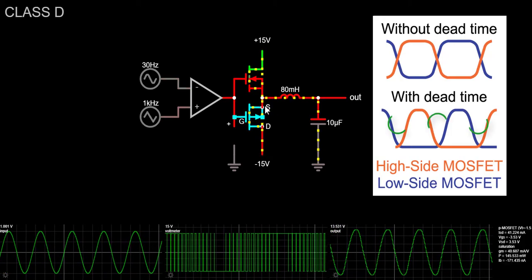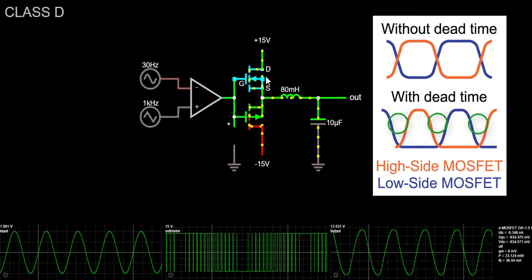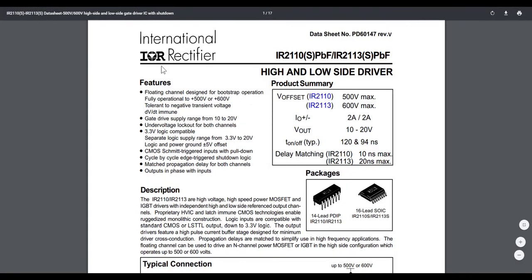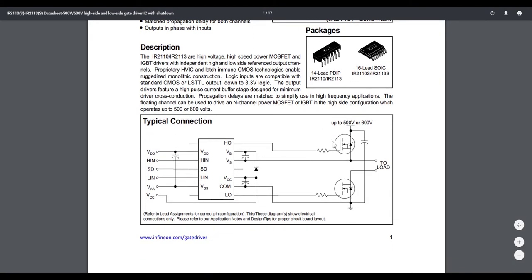To prevent this, we need to insert some dead time between the signals that drive the high and low side MOSFETs. One way to achieve this is to use a specialized MOSFET driver from International Rectifier, such as the IR2110S. These specialized ICs provide the boosted gate voltage needed for the high-side NMOS.